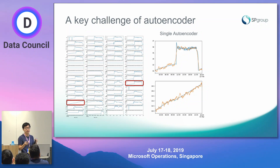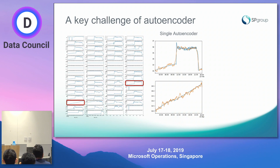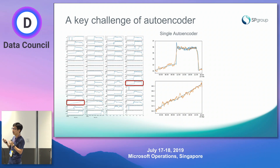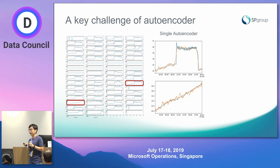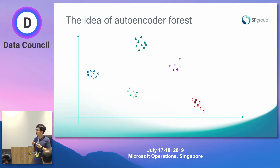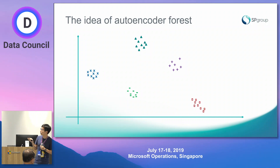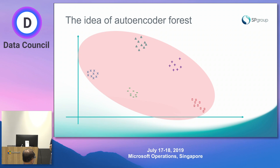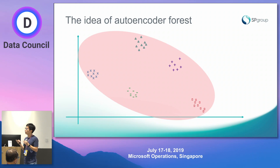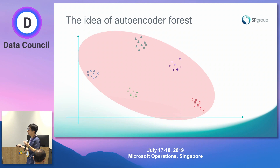Even if you have historical anomaly examples, you still face these issues because the training dataset has a lot of variety, and a single model must cover all of it. Using a synthesized example projected to 2D space, you can see there are multiple structures in the time series. When you use a single autoencoder to model this, it covers the whole space, including unnecessary areas between the clusters — areas where unseen anomalies may appear in the future.